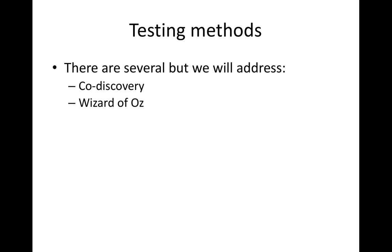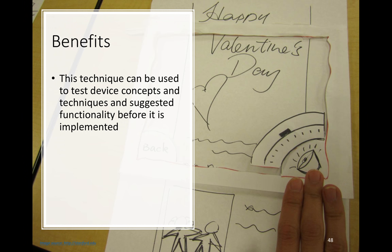Good Discovery and Wizard of Oz are the most well-known co-discovery methods. The Wizard of Oz technique can be used to test device concepts and techniques during a low-fidelity prototype, like a paper prototype, or during a high-fidelity prototype.